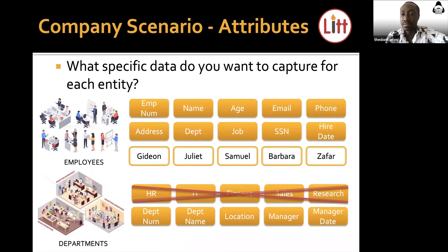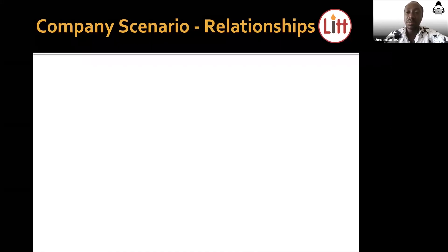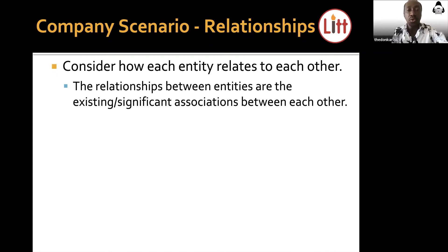In a lot of cases, the entities you identify should have relationships among them. Relationships form a major part of the data modeling process. If the data you are collecting cannot be related, you might as well not even bother building a database, because the data should be logically related. We even call it the relational database because the data has to be related. You consider how each entity relates to each other — the relationships between entities are the existing or significant associations among them.